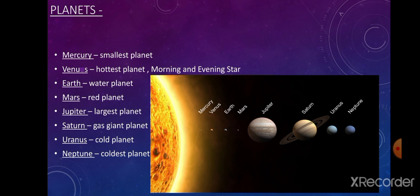Mercury is the smallest planet and it's closest to the sun. Venus is the hottest planet; its atmosphere is made up of carbon dioxide and it is covered by clouds, so it is known as the veiled planet. It reflects a lot of sunlight, making it the brightest planet. Venus reaches its maximum brightness shortly before sunrise or shortly after sunset, which is why it's known as the morning star or the evening star.